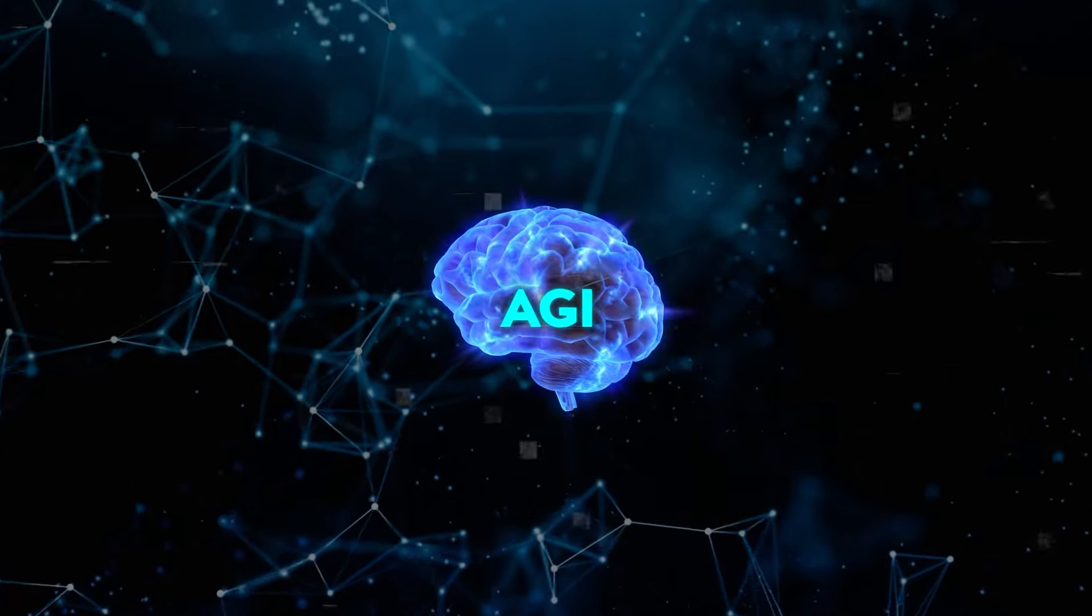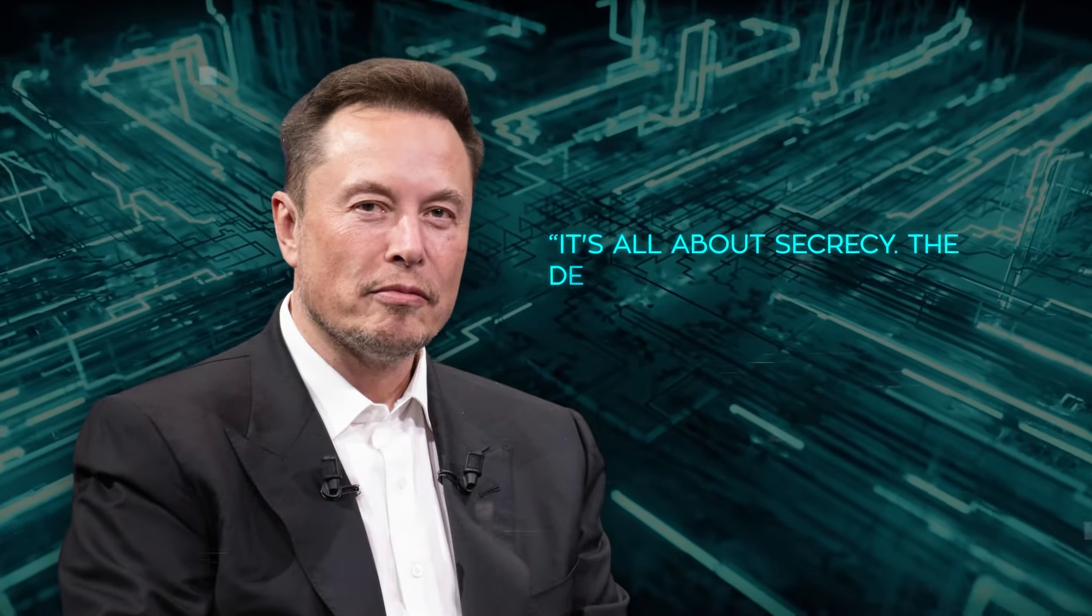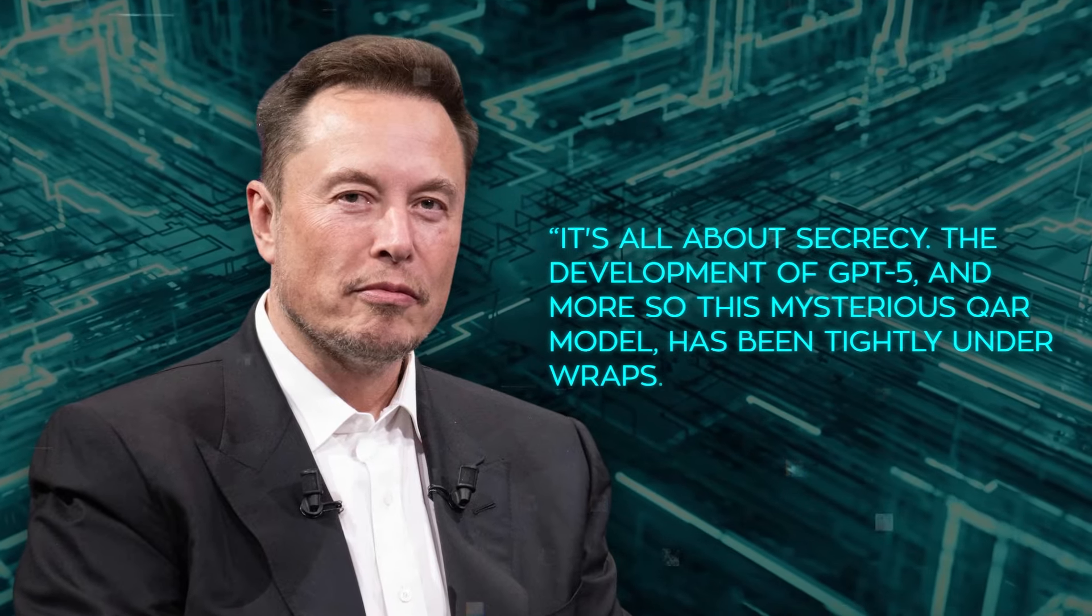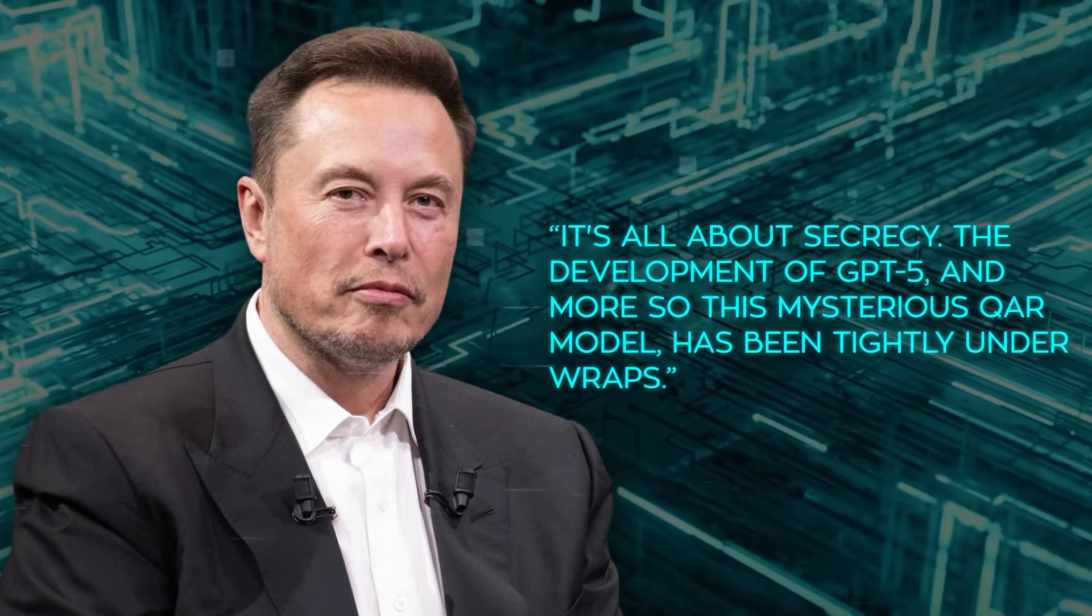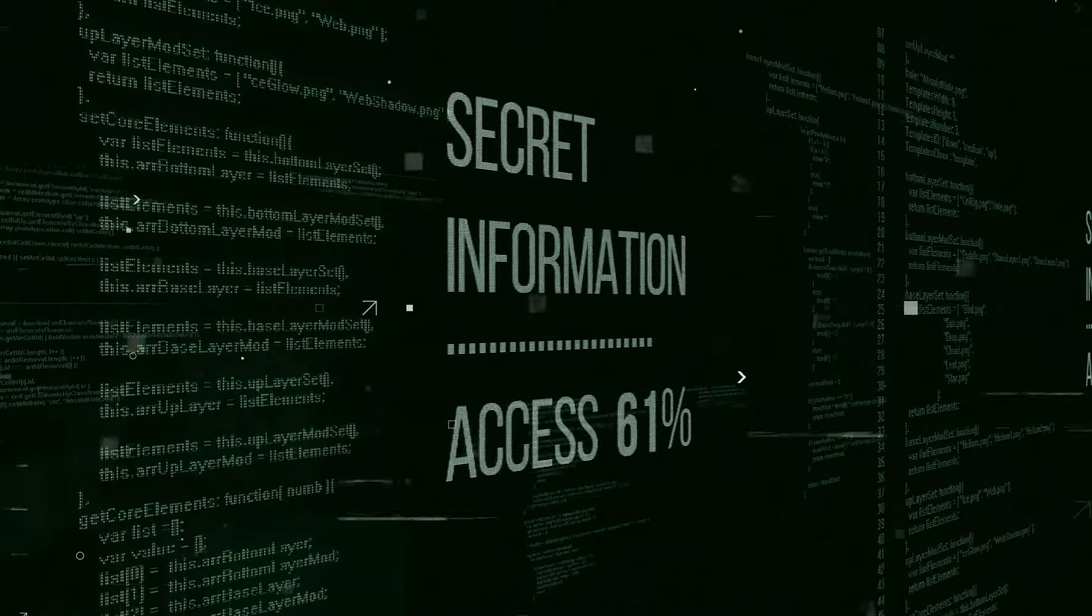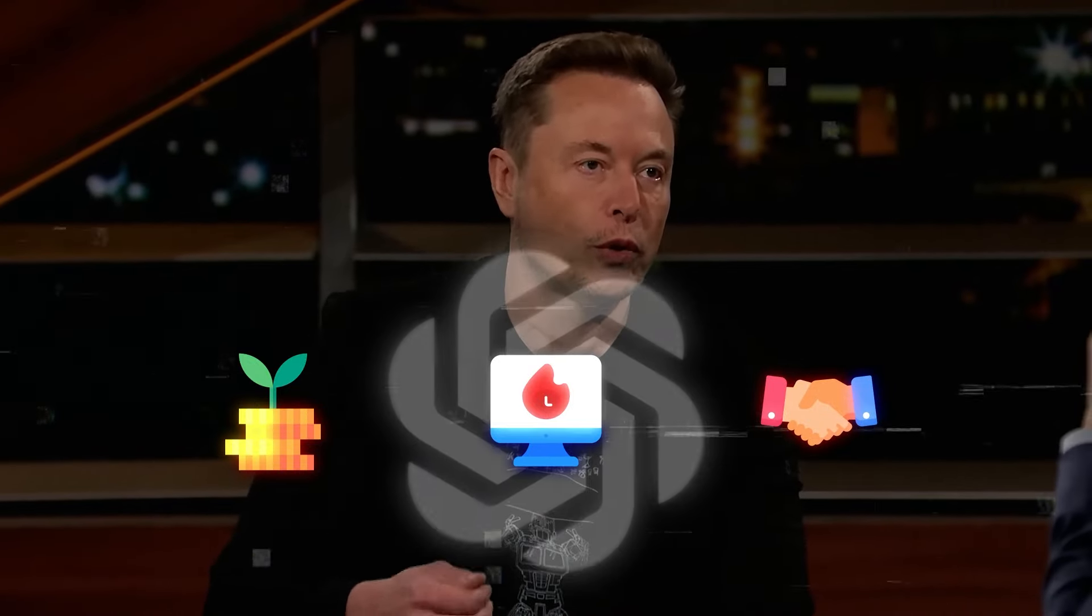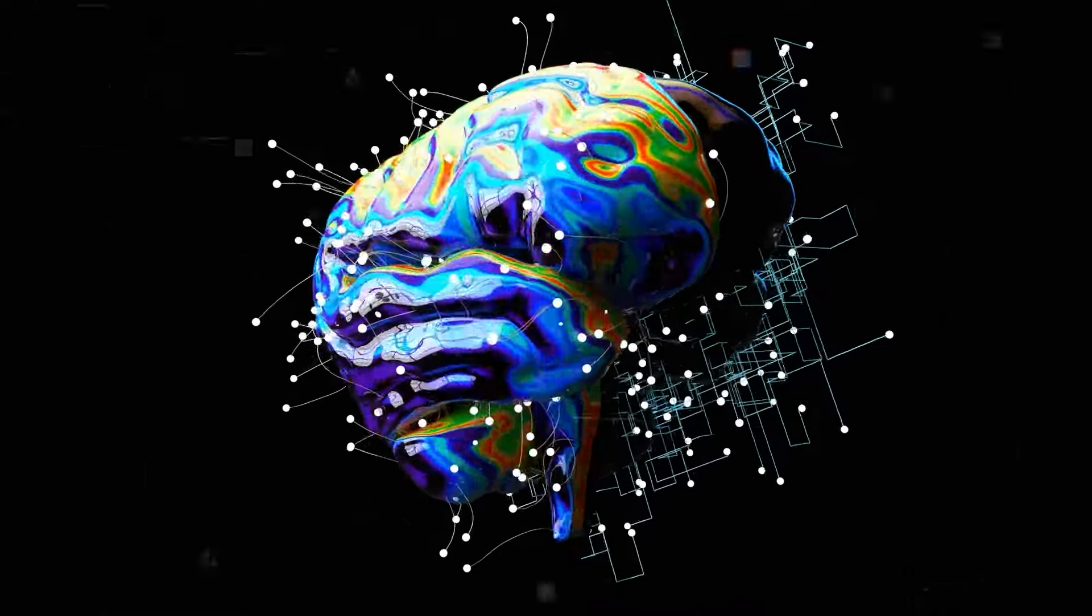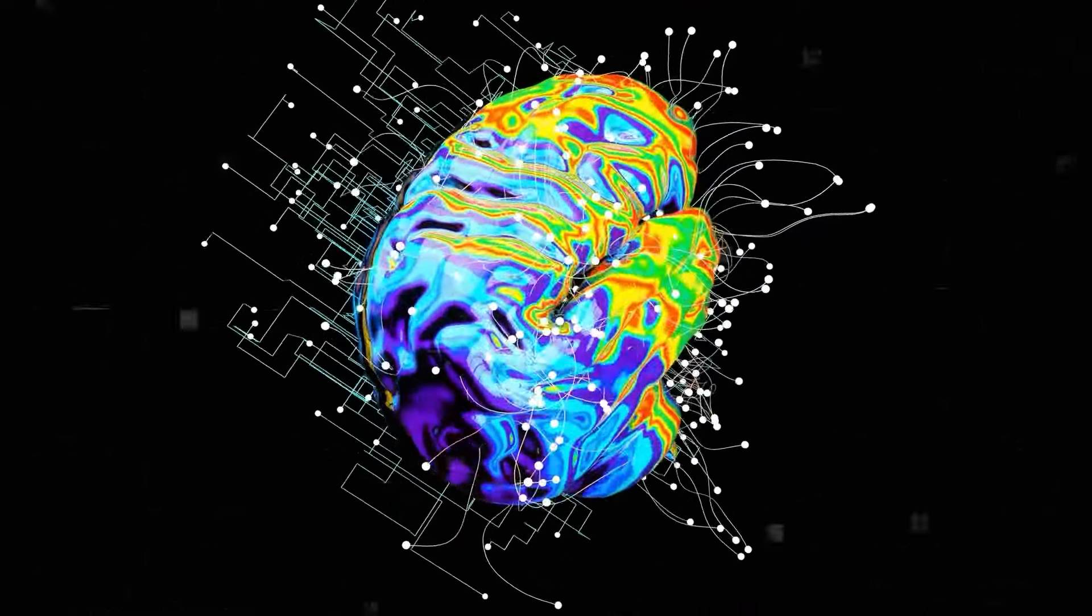But why isn't this front page news everywhere? Well, according to Musk, it's all about secrecy. The development of GPT-5, and more so this mysterious QAR model, has been tightly under wraps. And it's this secrecy that Musk is challenging. He's alleging that the shift towards profit, the exclusive deals, and partnerships are not just altering the course of OpenAI, but potentially withholding from humanity a technology that could redefine our future.